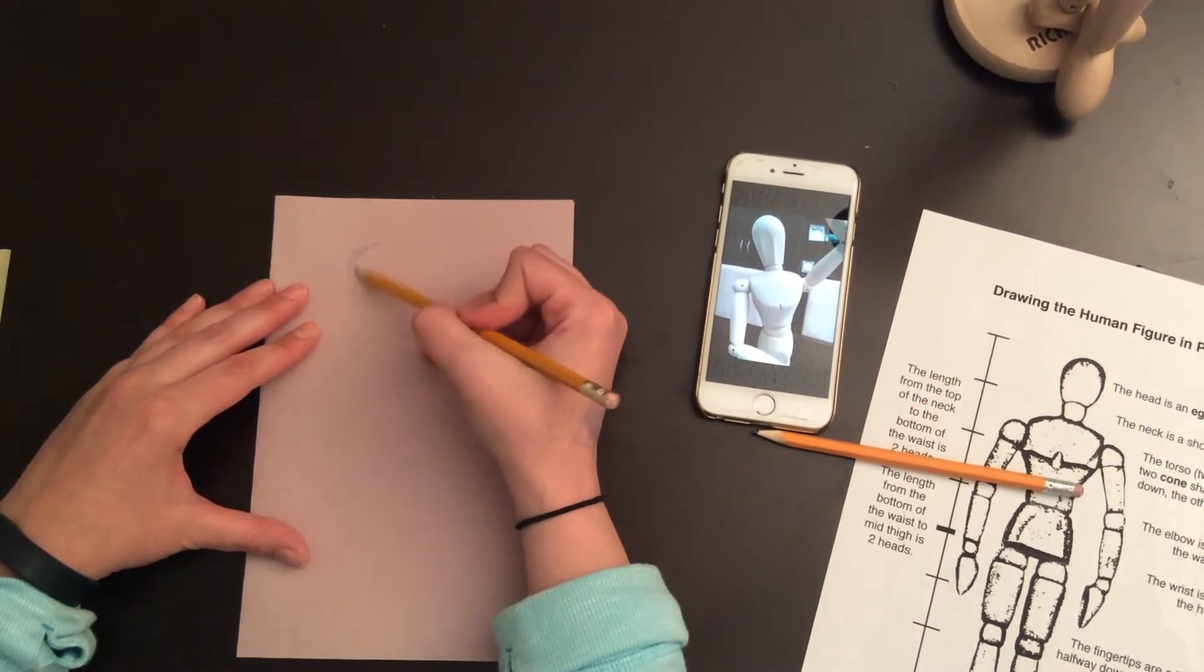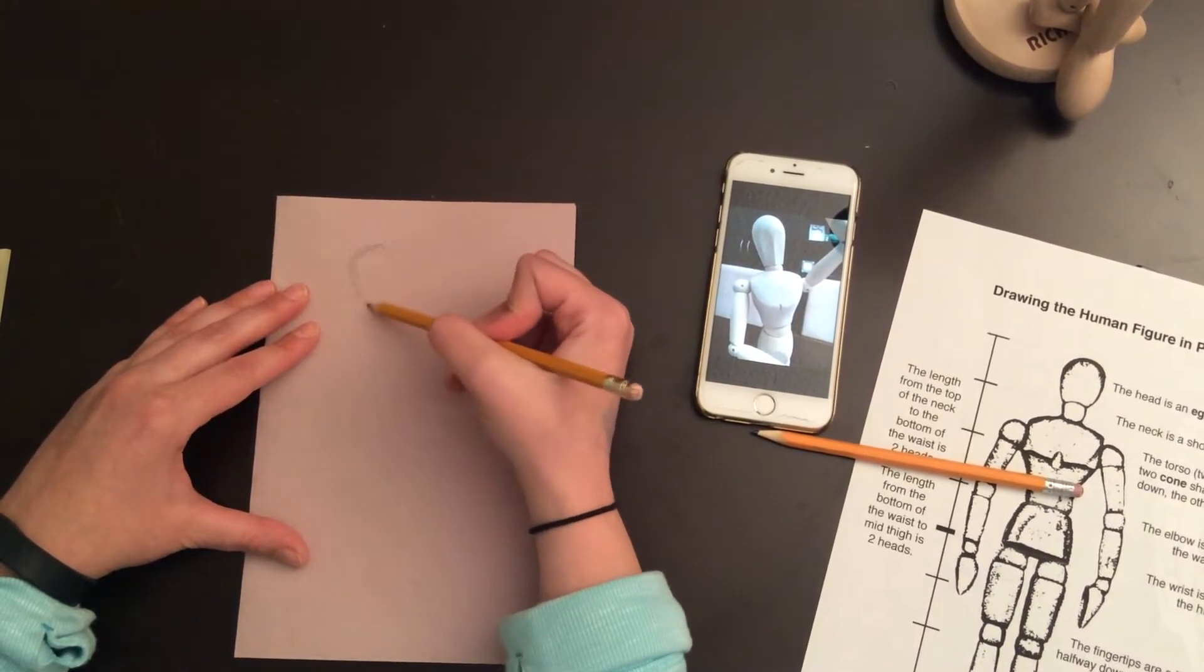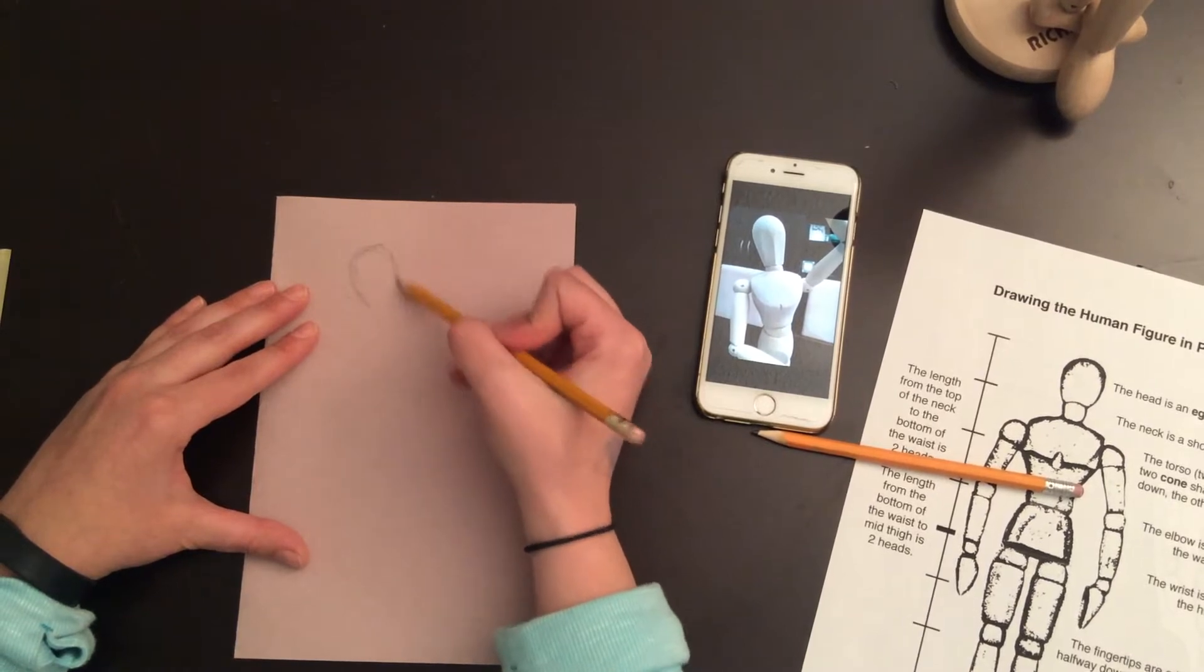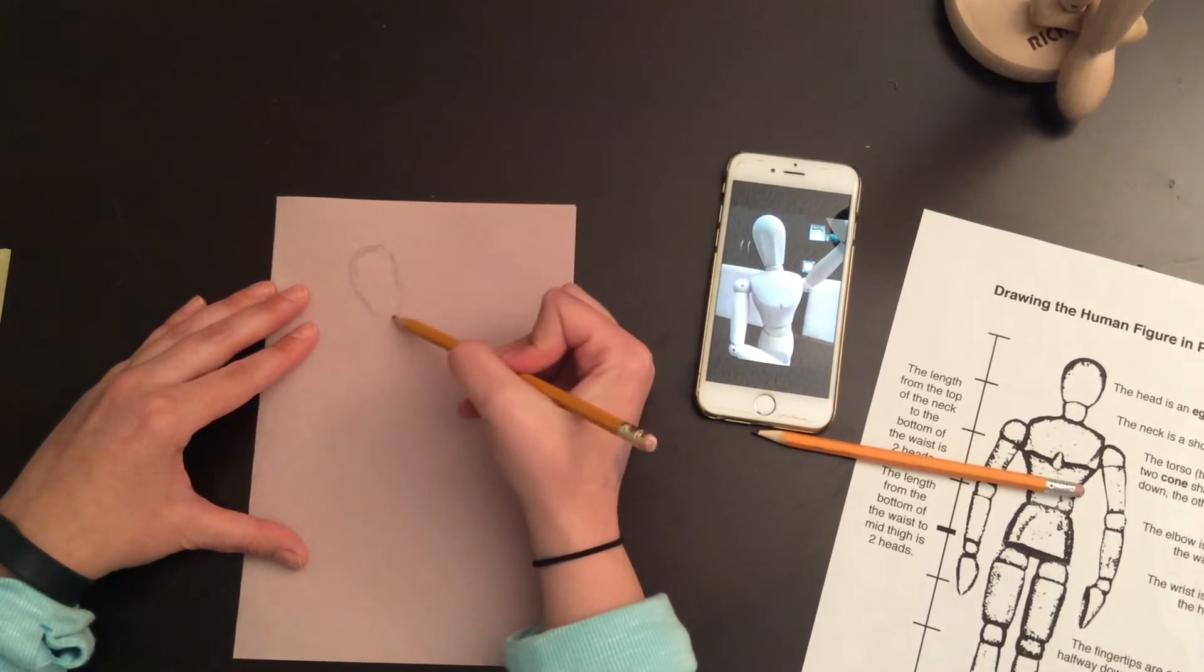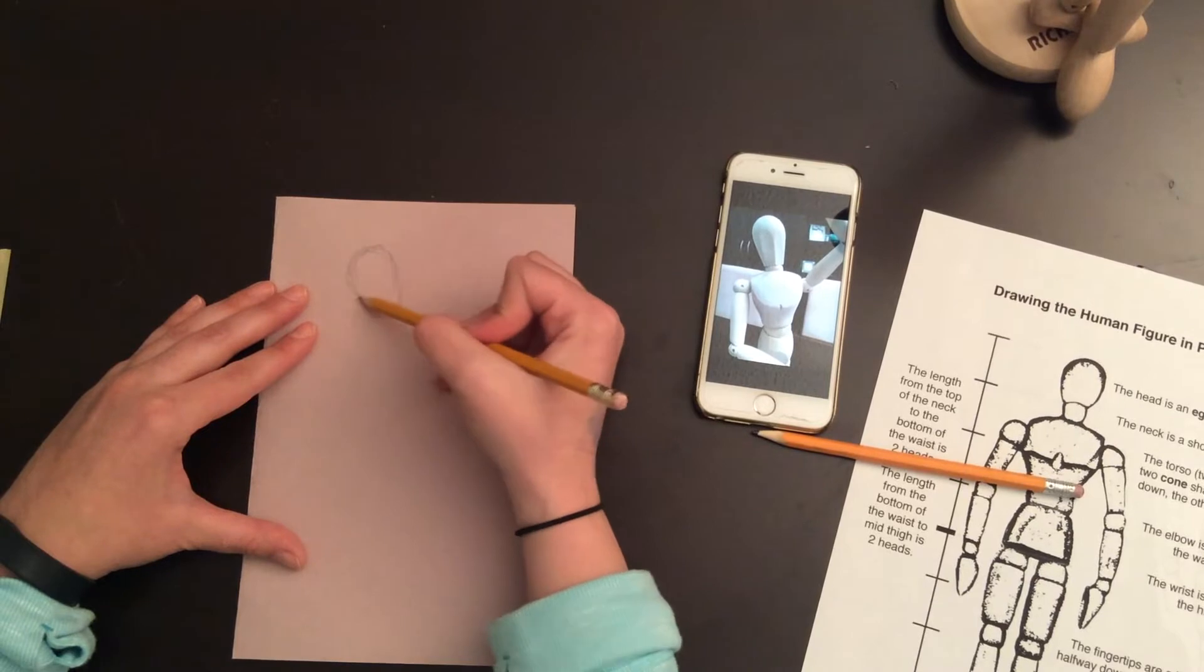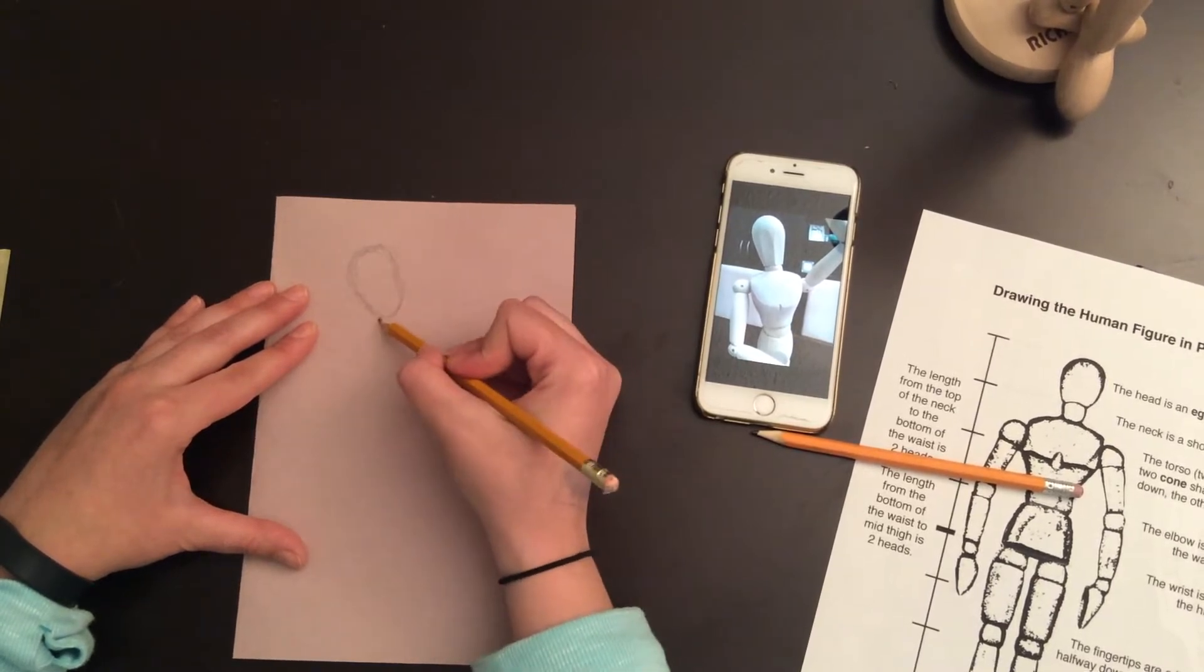So I'm going to start with my head. Again, I'm drawing nice and lightly. I'm using these sketchy sort of gesture lines just until I'm happy with what I've got, so I'm not set in stone, I haven't pressed too hard. So I've got my head there.